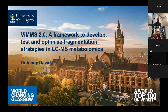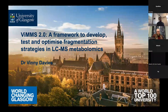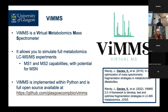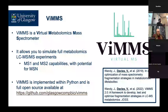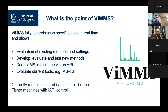Today I'm going to talk about VIMS, which is our framework for developing, testing, and optimizing new fragmentation strategies. VIMS is a virtual metabolomics mass spectrometer — basically a way of simulating full metabolomics LC-MS/MS experiments. It has MS1 and MS2 capabilities, and you simulate through an entire experiment and get simulated results back. VIMS is available in Python; there is a GitHub link if anyone wants to check it out.